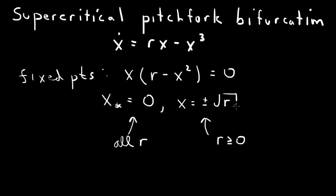The fixed points coincide at r equals 0. So when r is negative, we just have one fixed point at 0. Then as r crosses through 0, we generate two additional fixed points, so we have three fixed points when r is positive.